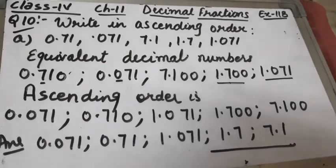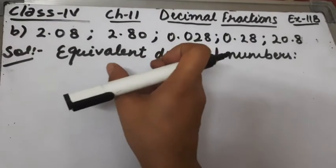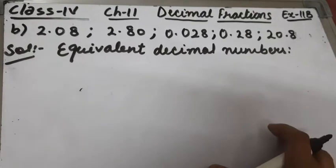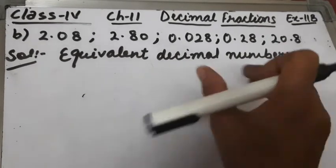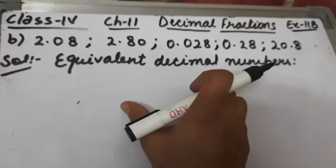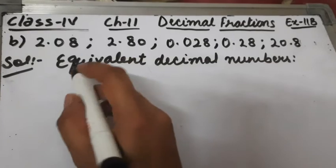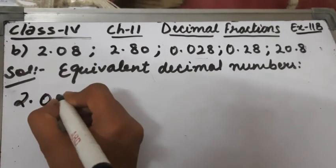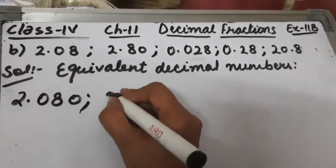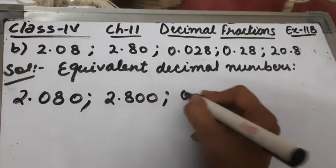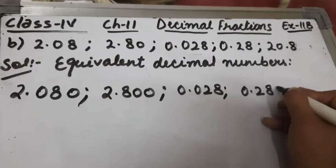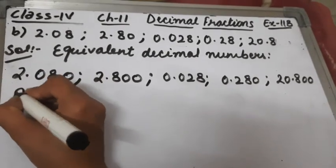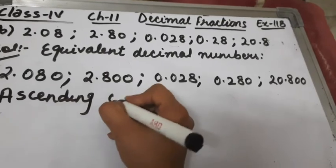This is part A of question number 10. Part B has the numbers 2.08, 2.80, 0.028, 0.28, and 20.8. We have to arrange them in ascending order. First, we write equivalent decimal numbers — the maximum digits after the decimal are 3, so we make each fraction have 3 digits: 2.080, 2.800, 0.028, 0.280, and 20.800.